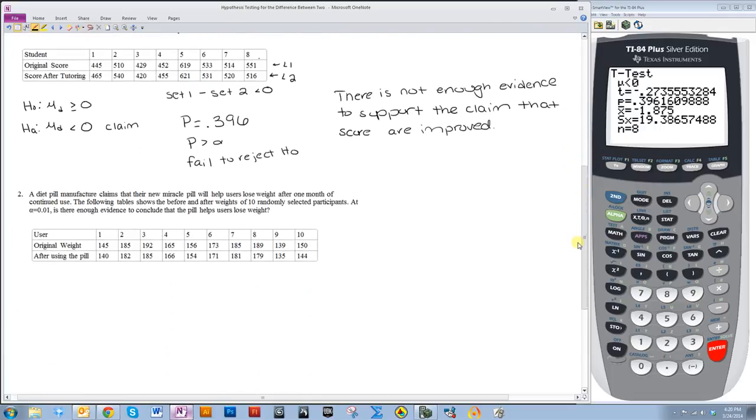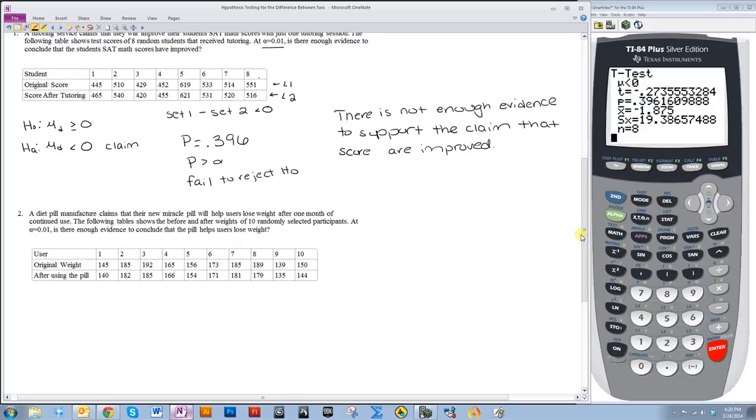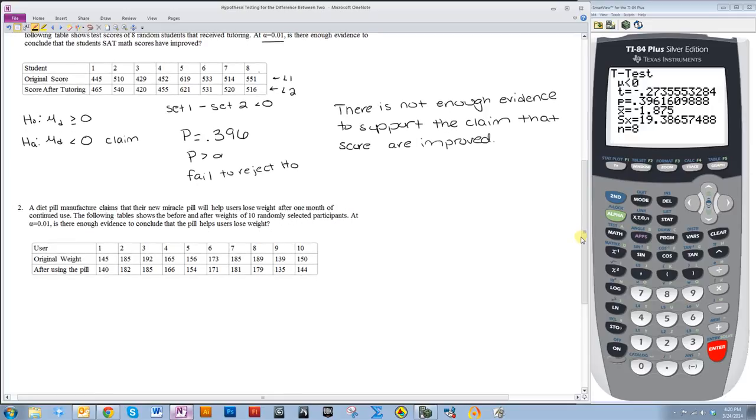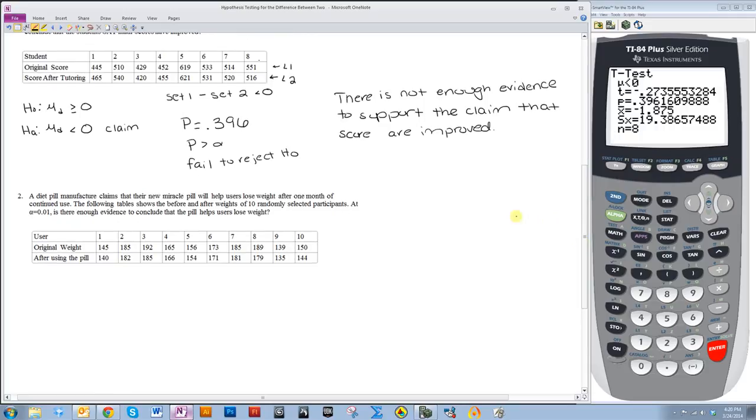A diet pill manufacturer claims that their new Miracle pill will help users lose weight after one month of continued use. The following table shows the before and after weights of 10 randomly selected participants. At a 1% level of significance, is there enough evidence to conclude that the pill helps users lose weight? So the first thing I need to do is figure out what my H0 and HA are.